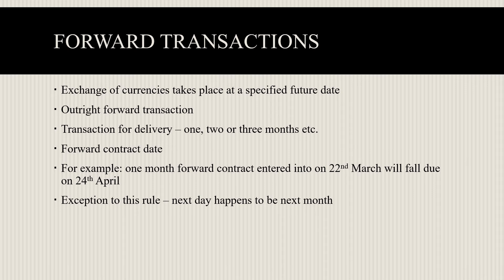Forward transactions are where exchange of currencies takes place at a specified future date, after the spot date. This is also called outright forward transactions. Delivery can take place after one month, two months, or three months — a forward contract for delivery one month means exchange of currencies after one month, two months means after two months, and so on. The forward contract date is always calculated from the spot date.